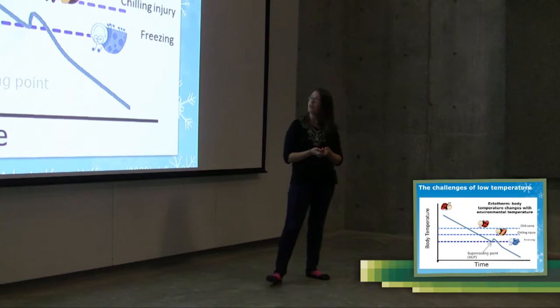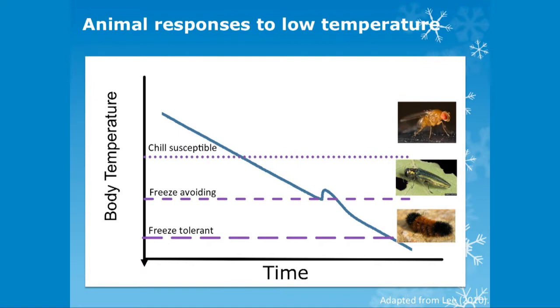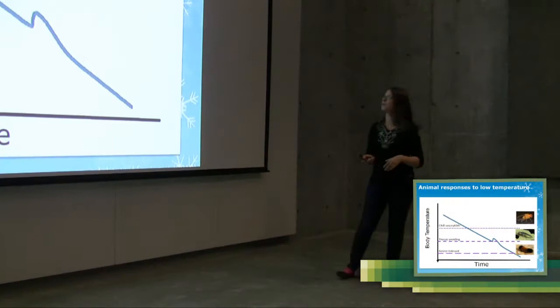So animals respond differently depending on their cold-tolerant strategy to freezing. And you might have sort of gotten this hint as I talk through some of the species that are very cold-tolerant. Most of the animals on the planet are what we call chill-susceptible.